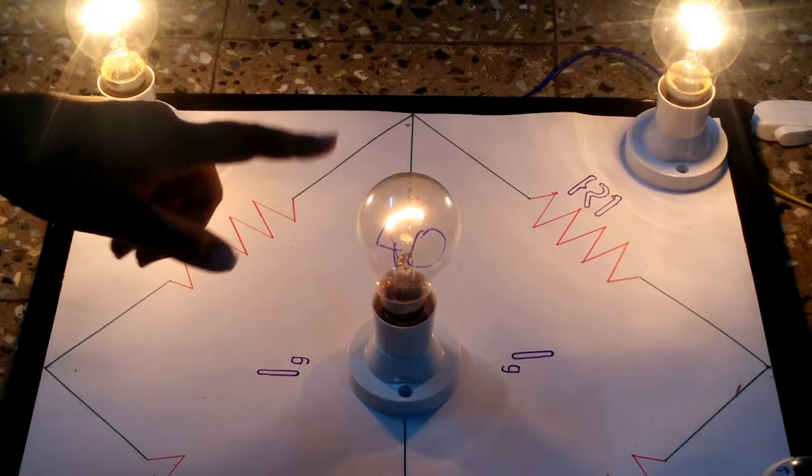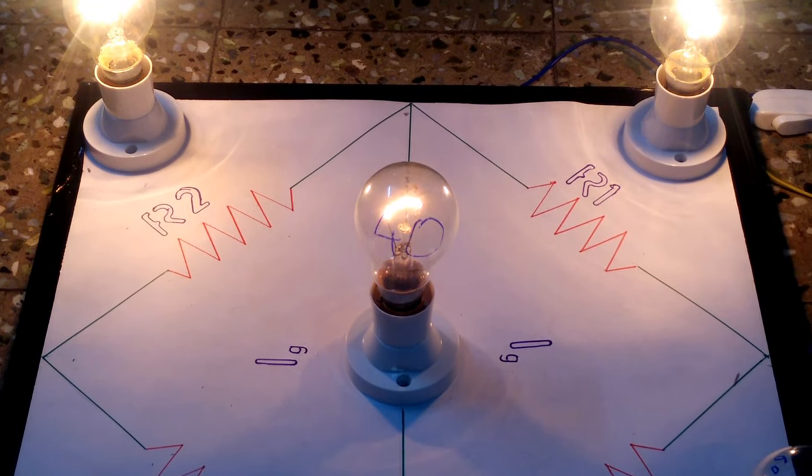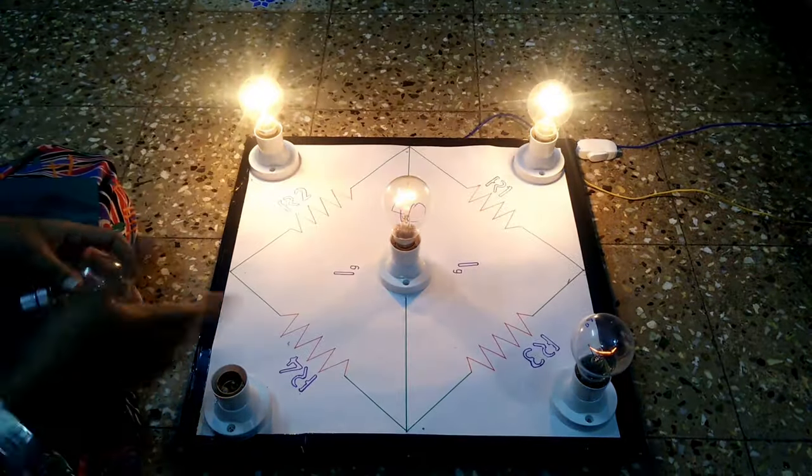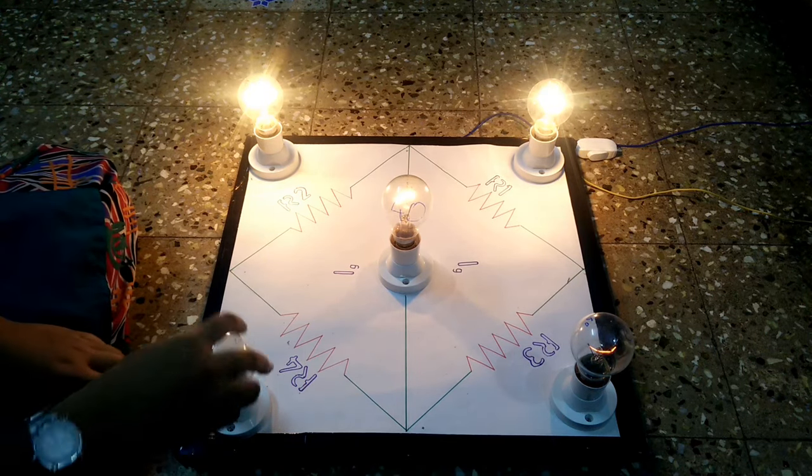When I remove one bulb, the bulb still glows because the condition is unbalanced. These two bulbs are lit and this is the only bulb on this side. So, the condition is unbalanced and still the bulb starts to glow.